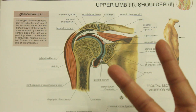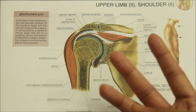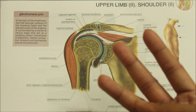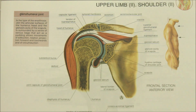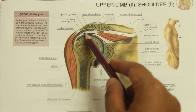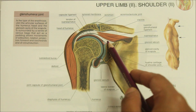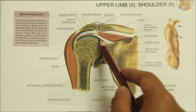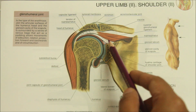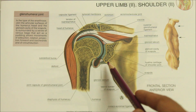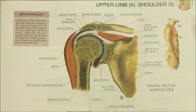The first ligament is the capsular ligament. It is very loose and permits free movement. It is least supported inferiorly, where dislocations are common and can damage the axillary nerve.